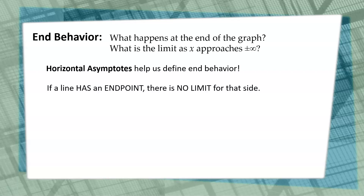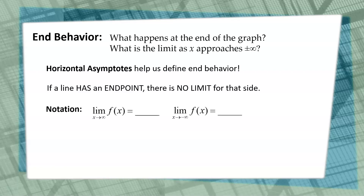If a line has an end point, there's not going to be a limit for that side. If you think about a parabola, a parabola has two arrows at both ends of the graph, so there's no end point along that line. But if we're dealing with the square root function, the parent function starts at (0, 0), at the origin — that has an end point, but the other side of the line does not. So there will be times where we might only have one limit. So how do we write a limit? How do we refer to a limit?